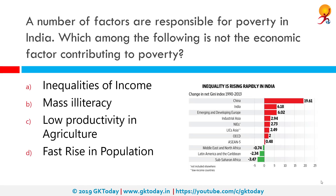A number of factors are responsible for poverty in India. Which among the following is not the economic factor contributing to poverty? The correct answer is inequalities of income. As of November 2016, India is the second most unequal country in the world after Russia. The richest 1% of Indians own 58.4% of wealth, and the richest 10% own 80.7% of the wealth. This trend is going in the upward direction every year, meaning the rich are getting richer at a much faster rate than the poor.